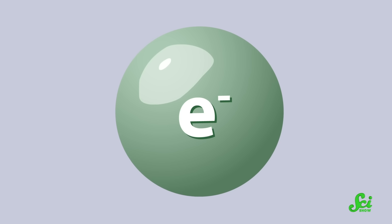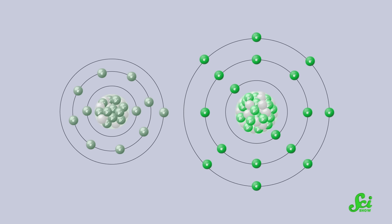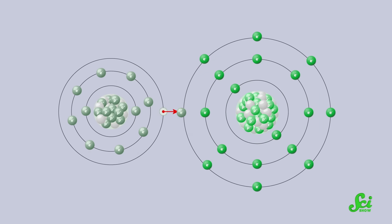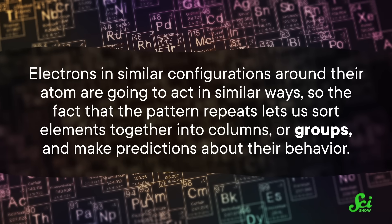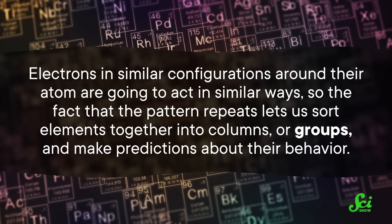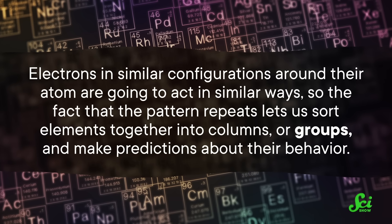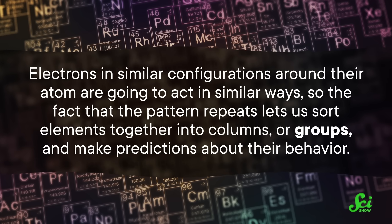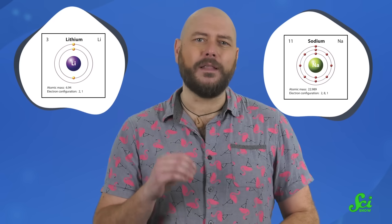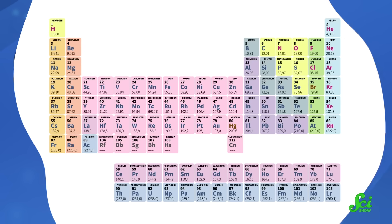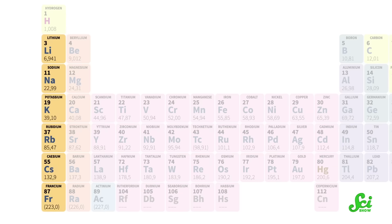When those subshells fill up, the pattern repeats in new subshells, which means that by listing the elements in order, something interesting happens. Electrons are everything in chemistry — all chemical reactions are just electrons swapping places, until you get down to the nuclear stuff. Electrons in similar configurations around their atom are going to act in similar ways, so the fact that the pattern repeats lets us sort elements into columns, or groups, and make predictions about their behavior. These repeating properties are that 'periodic' thing in the name. Lithium and sodium both have only one electron in their outermost subshell; they react in similar ways, so we put them in the same group — group one.